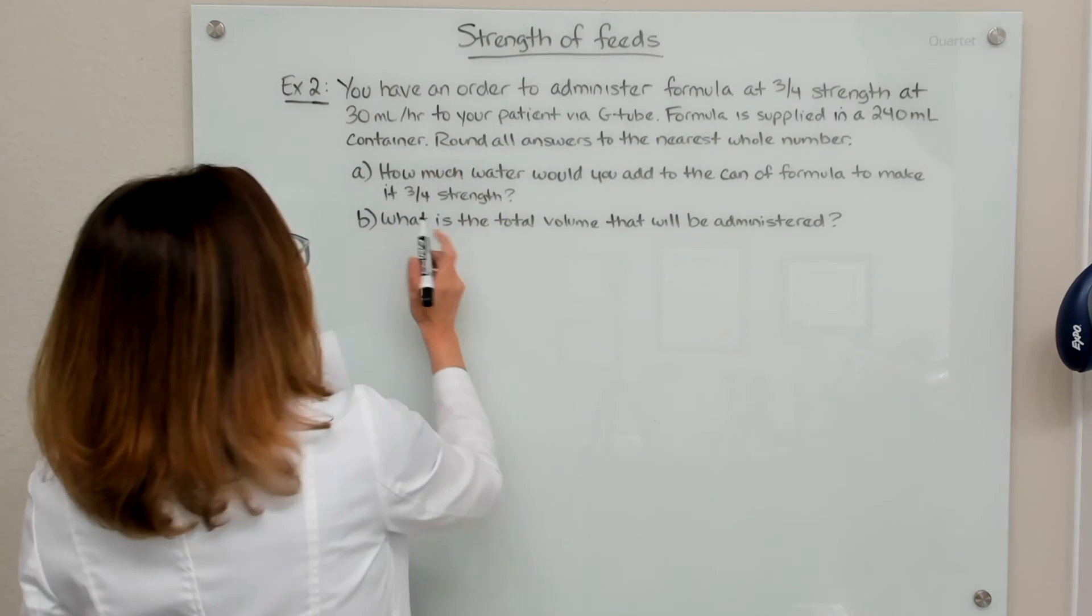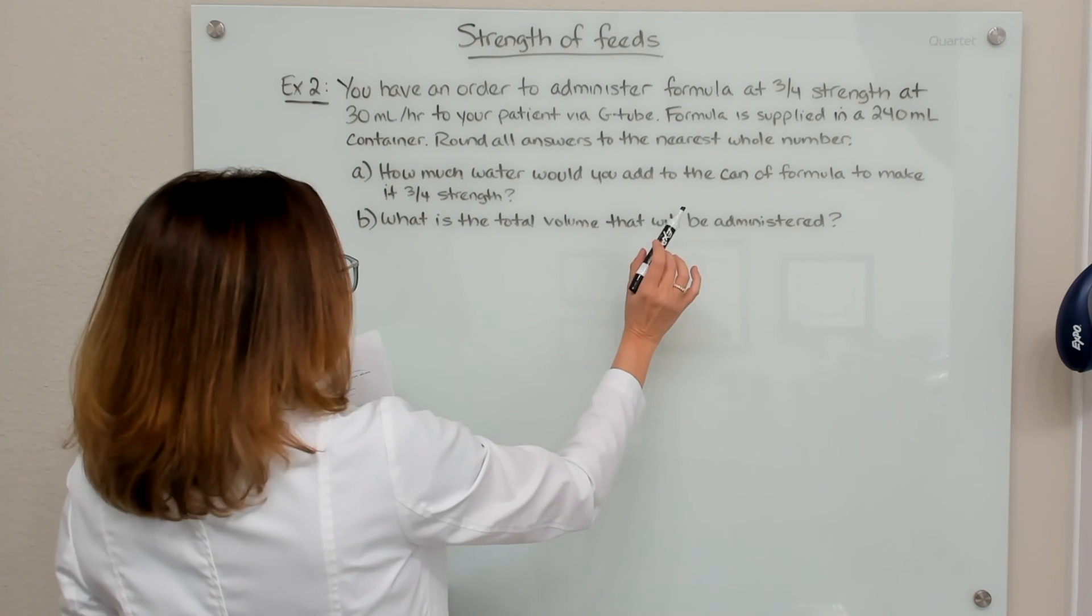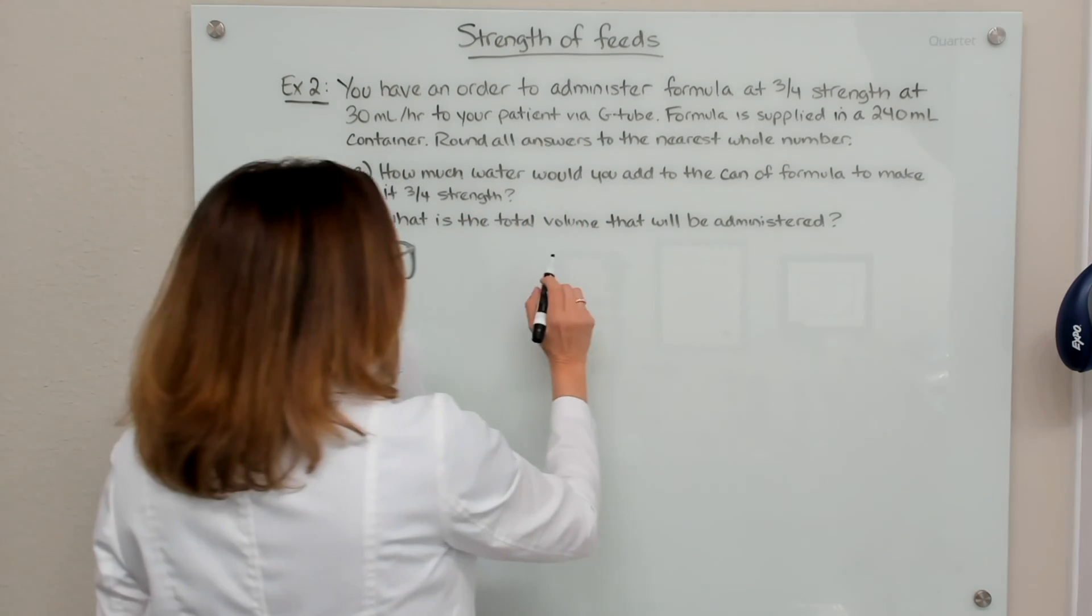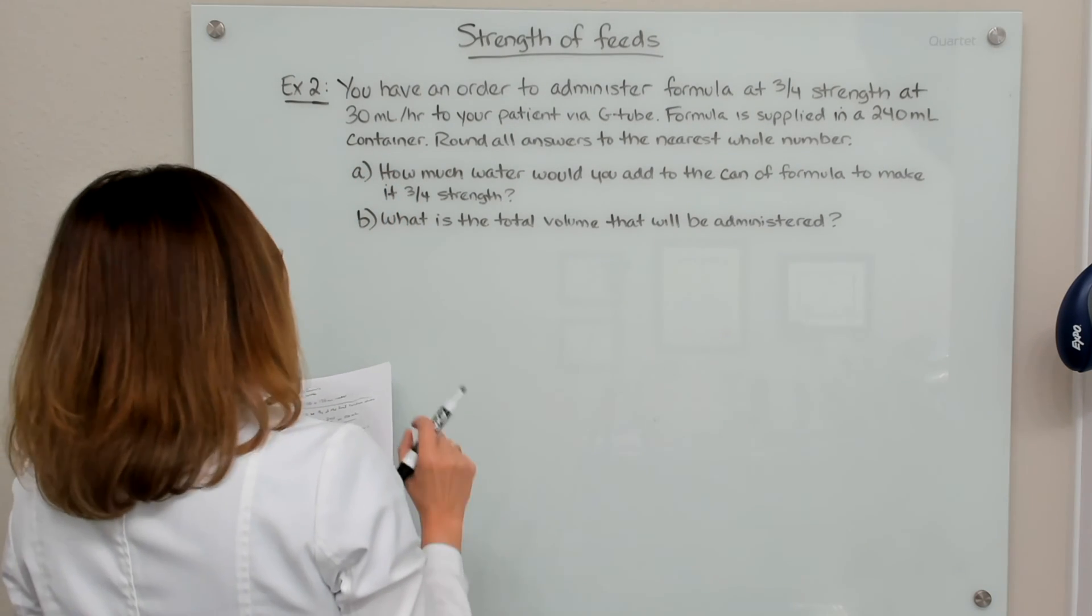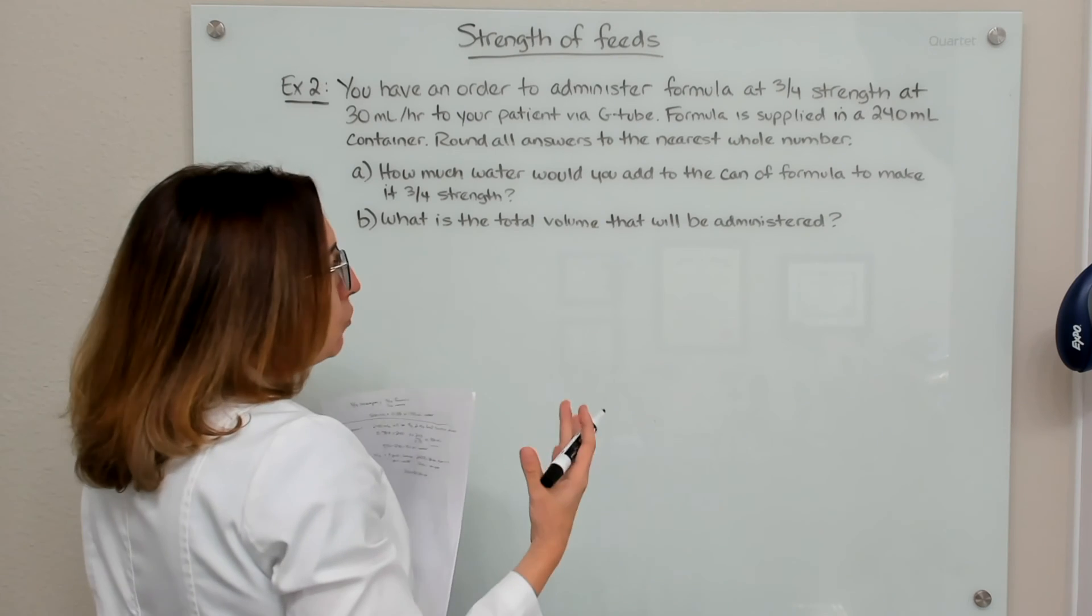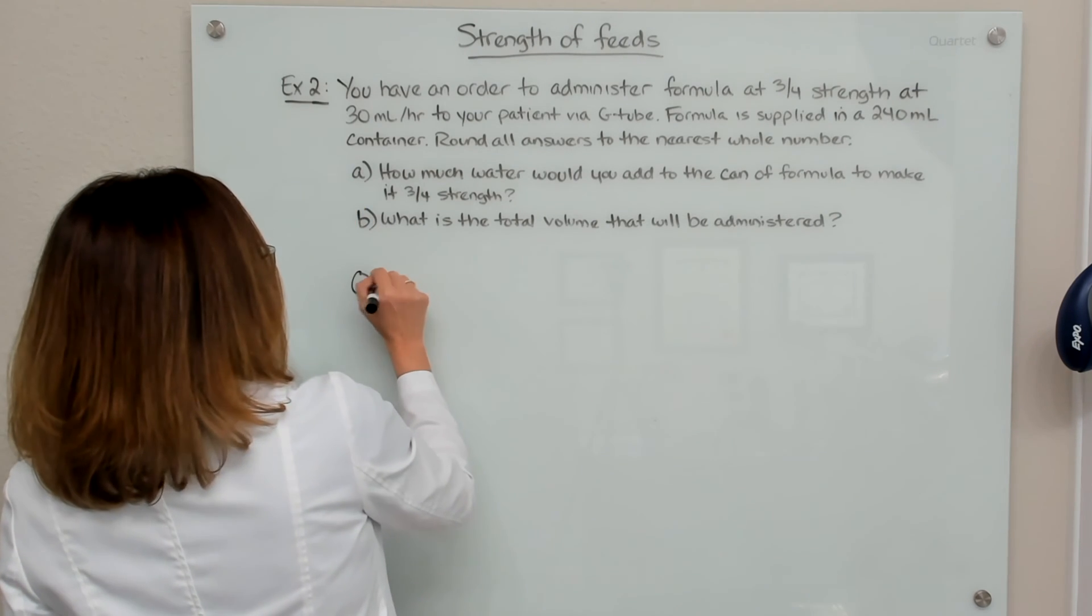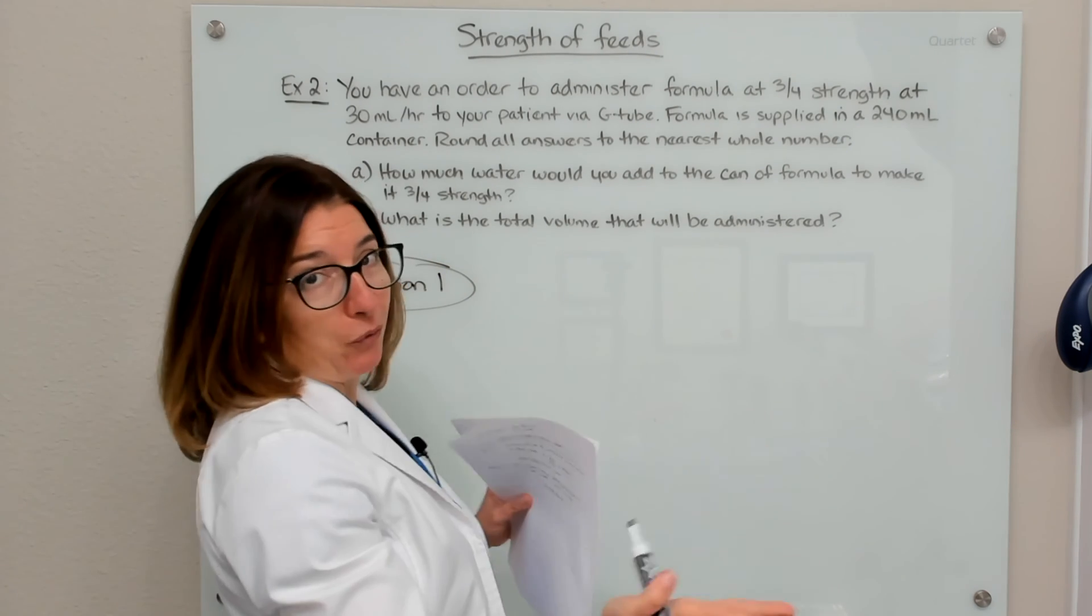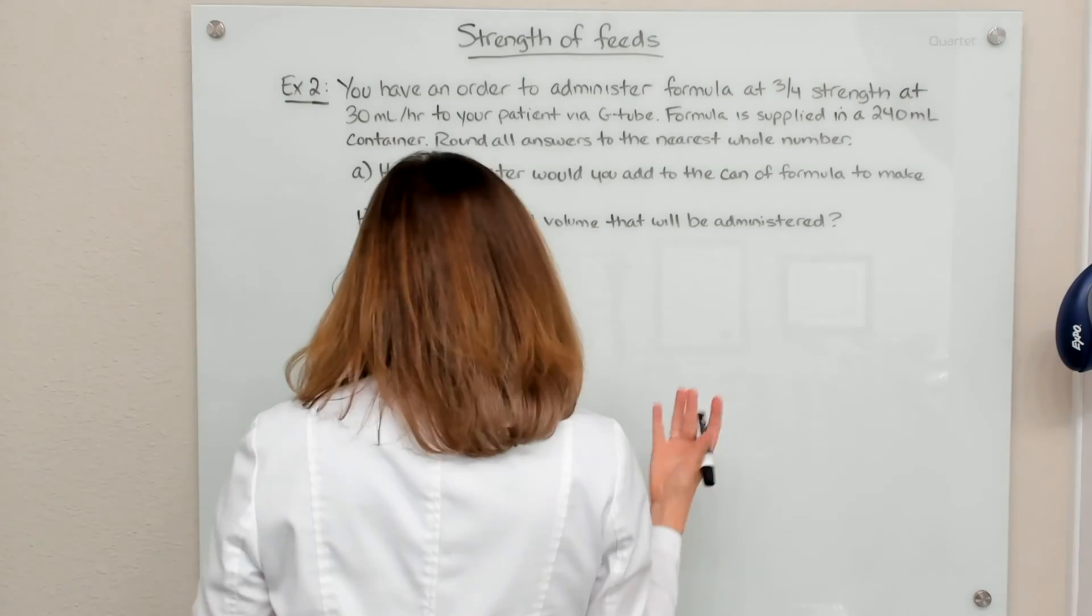Okay, so our two questions being asked: how much water would we add to the can of formula to make it three quarters strength? And what is the total volume that will need to be administered to our patient? So there are really two main ways that we can solve this problem. So I'm going to go through option one first, and then I'll go through option two.